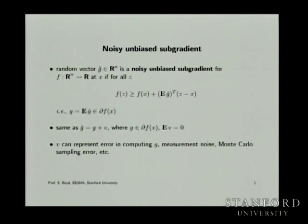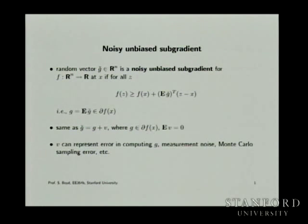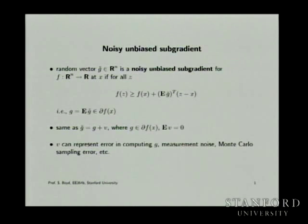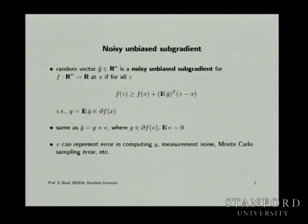A noisy unbiased subgradient for f at x is a random vector g-tilde that satisfies this: on average, its expected value is a subgradient.